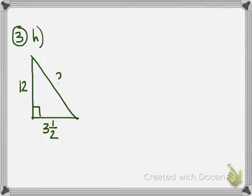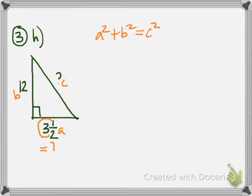For 3H, we know two sides of a right triangle, so we use Pythagorean theorem to find the third side. The legs are A and B and we need to find C. 3½ might be easier as an improper fraction — using the method from junior high, 2 × 3 = 6, plus 1 = 7, so 3½ = 7/2. We'll put that in for A, squared in parentheses, plus 12² = C².